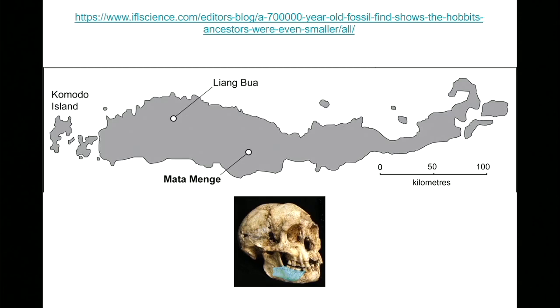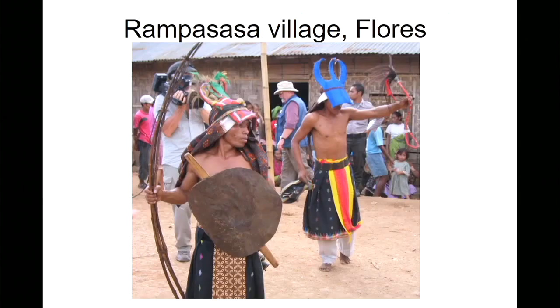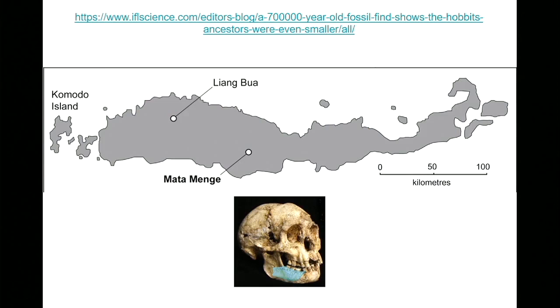It's not clear exactly what this Mata Menge specimen was — because maybe it is Homo floresiensis at an earlier date. This is about 700,000 years old, so it's older. And there are tools on the island that are even older. So Flores was occupied by someone, perhaps for a long, long time, and there may have been one colonization event or a few. This is new, it's on schedule, and it's sounding very familiar.